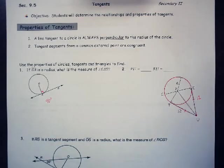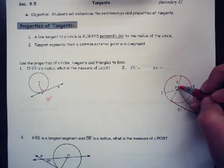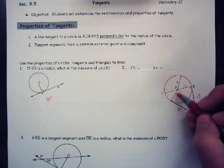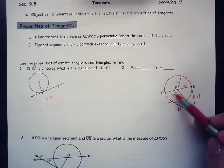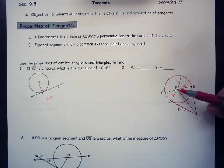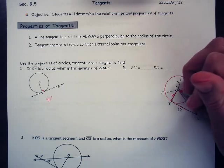And then to find PU, I'm going to have to use this information that tells me the radius is 6. So I know that PE is 6 and I know that PT is 6, because they're all a radius. If one radius is 6, they all have to be 6.